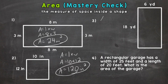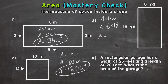Number three: area equals length times width. Plugging in a length of 6 yards times a width of 18 yards, that gets us to an area of 72 square yards.